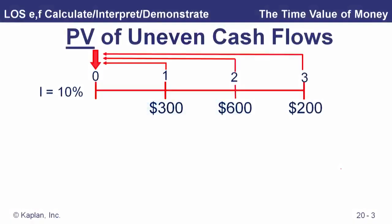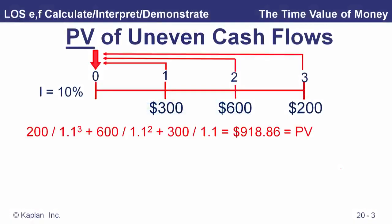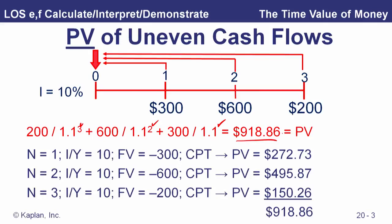The idea is the same: we're going to take the present value of each of those three cash flows and add them all up to get $916.86 — discounting the $200 for three periods, the $600 for two periods, the $300 for one period, and summing them all up. Those are just the calculator strokes for calculating those present values.